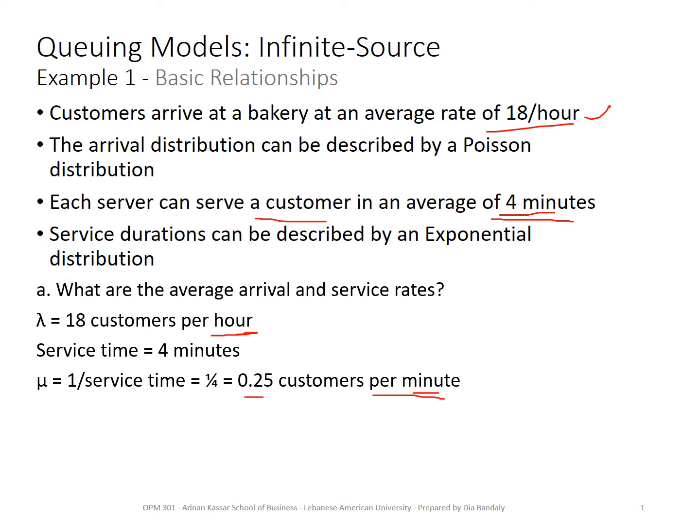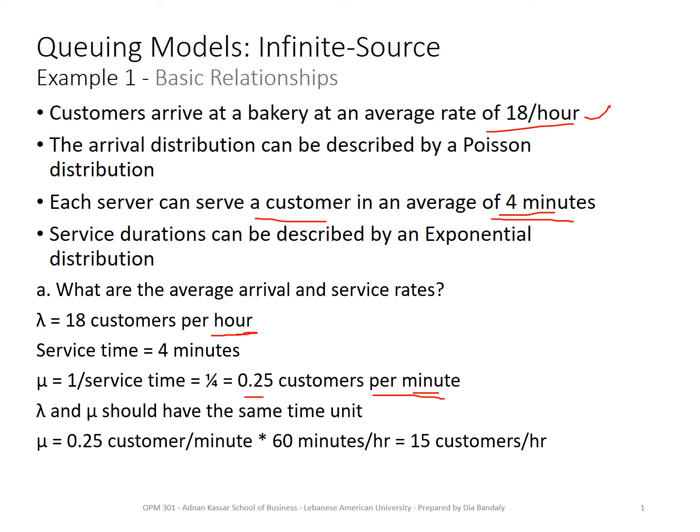This does not comply with the time units used in lambda, which is hours. So I have to change one of these. I prefer always to increase the time unit, so I will change that from minute to hours. I just multiply by 60, and I get mu equal to 15 customers per hour. Now these two are matching and we will be fine. We answered the first part, which is very essential. And now we are ready to answer any other question now that we have lambda and mu.